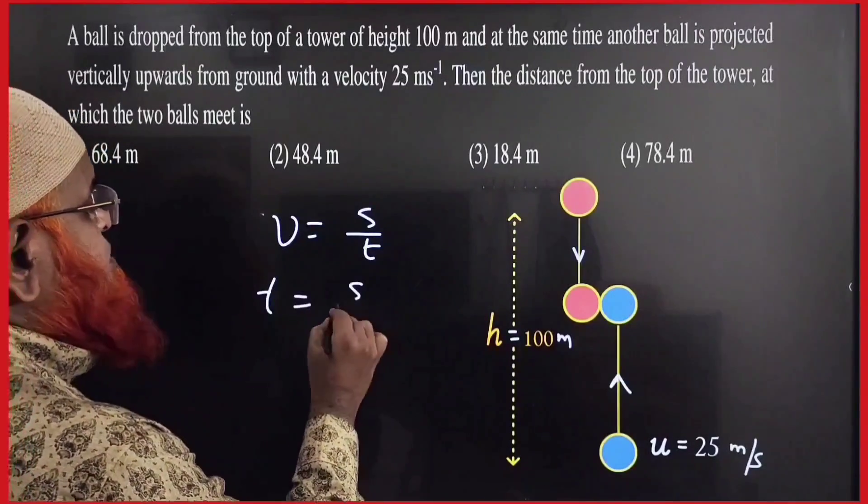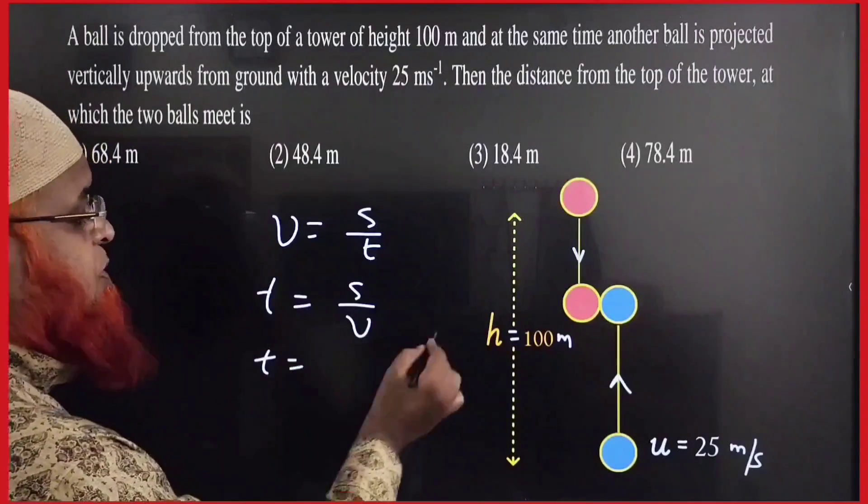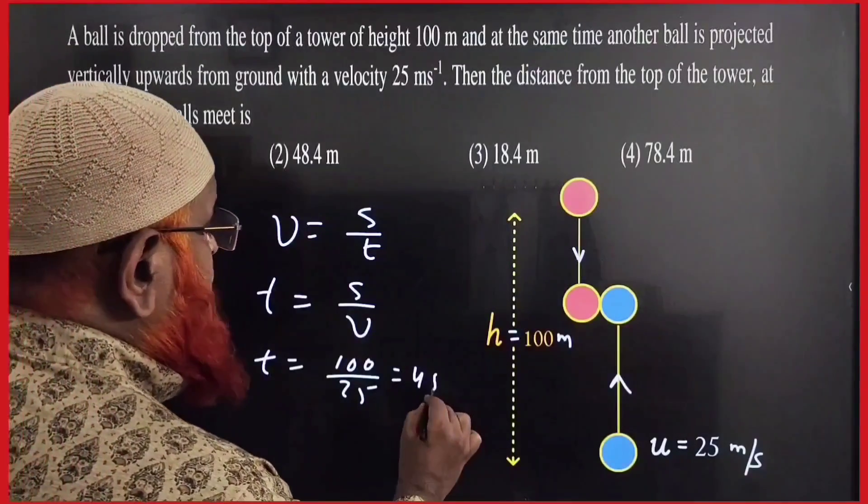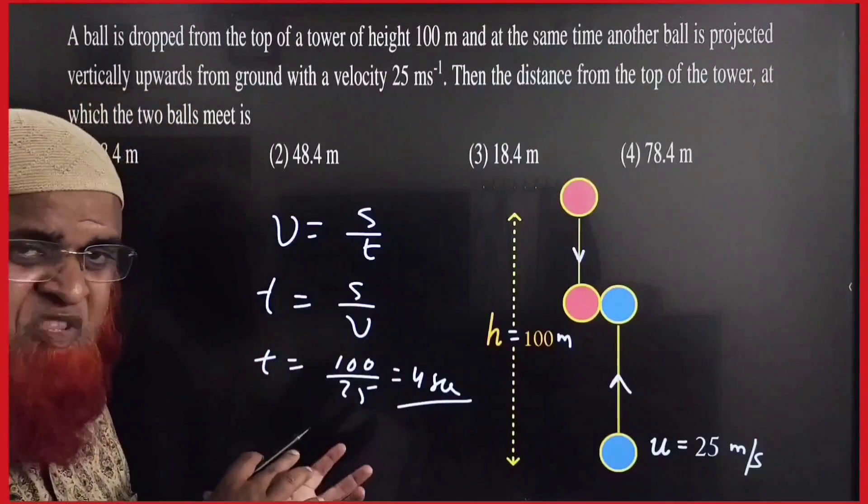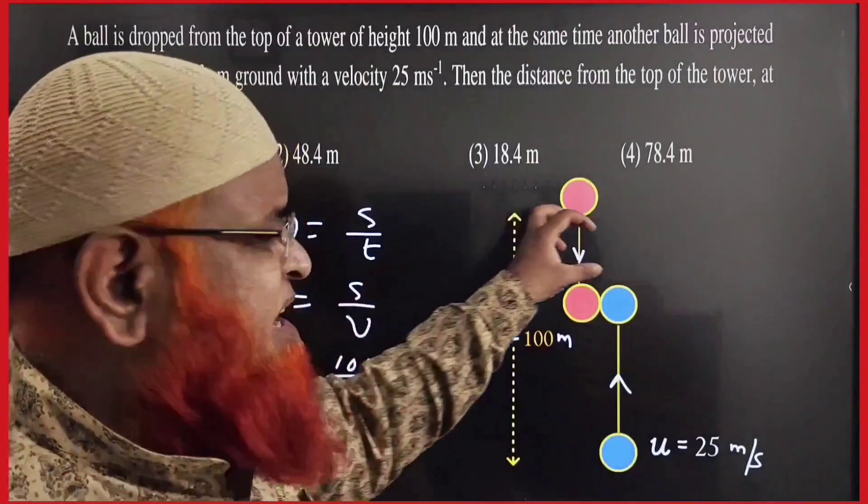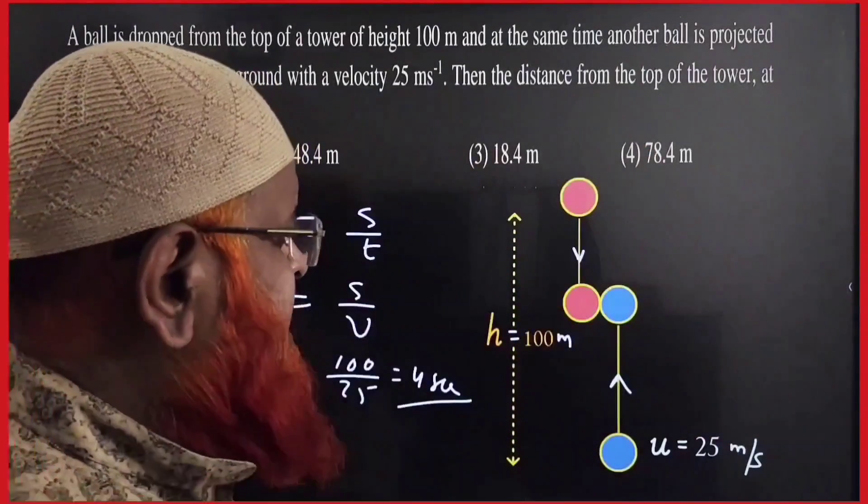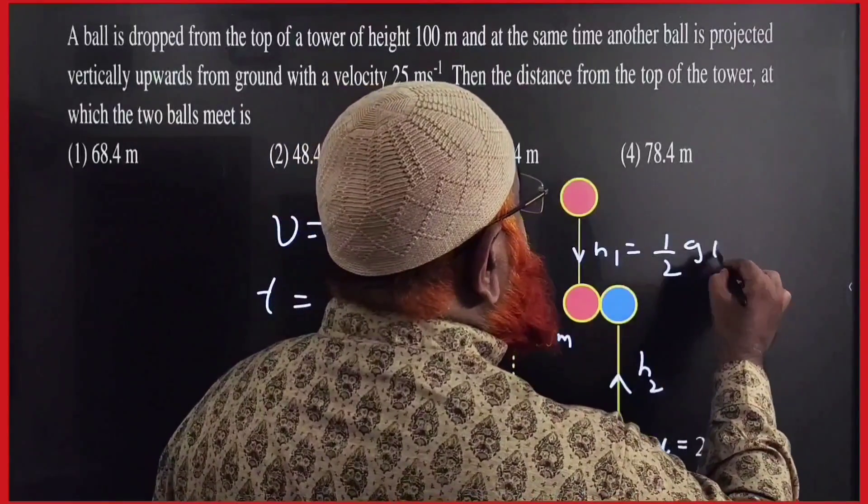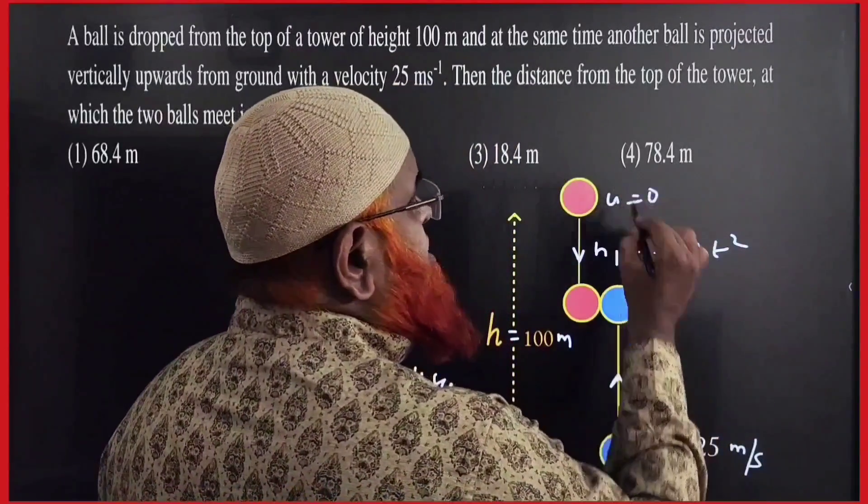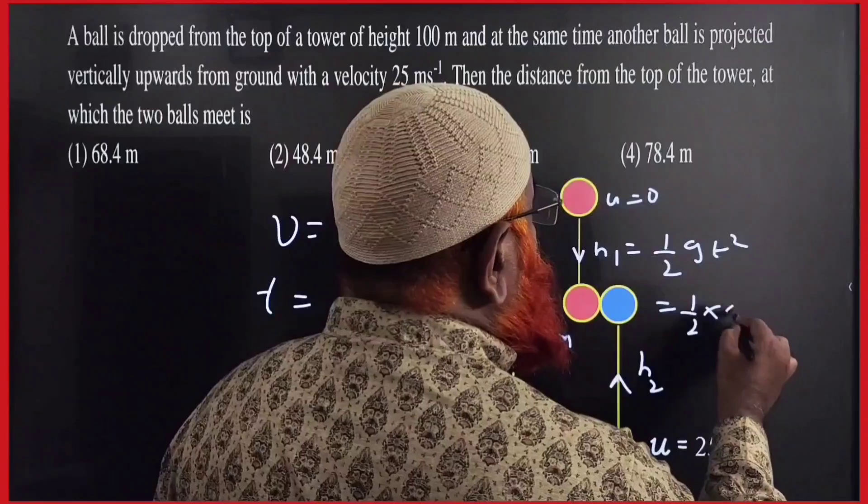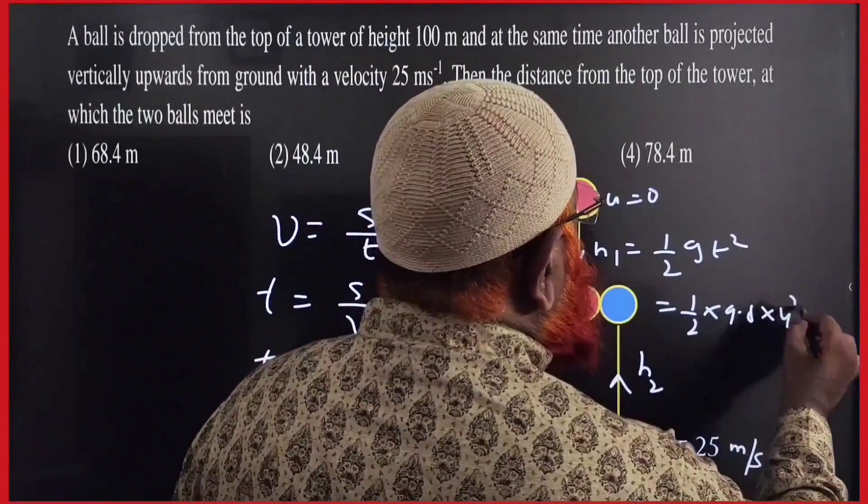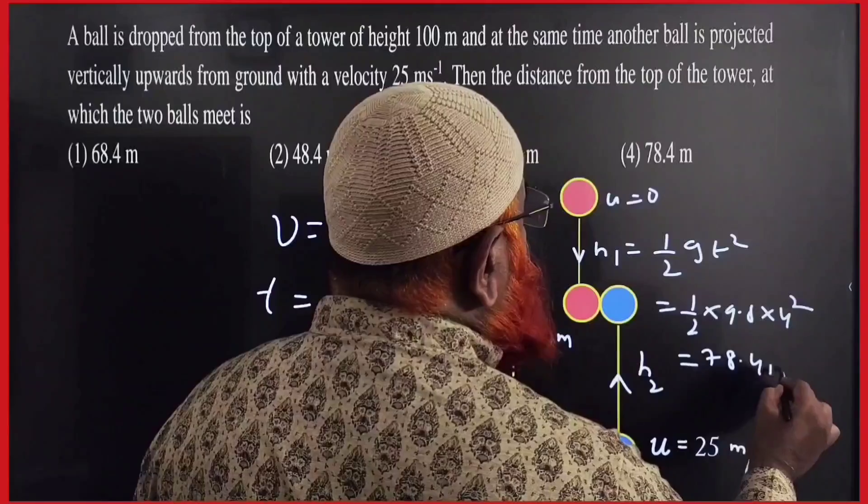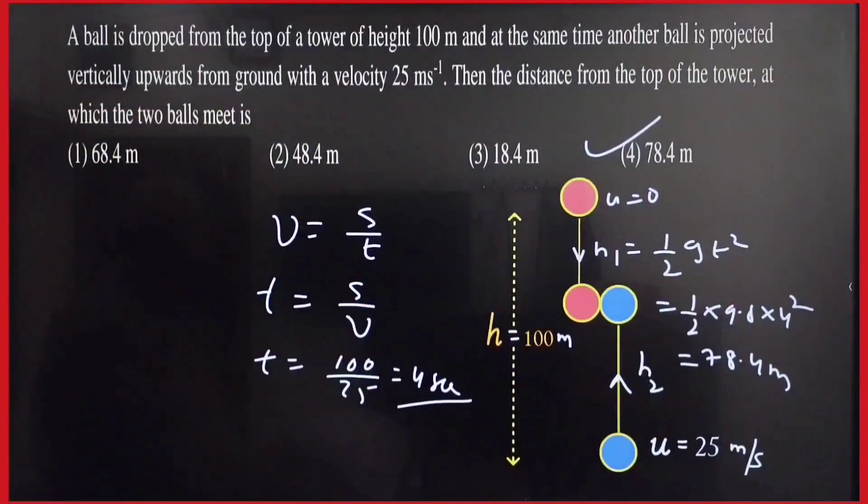Velocity is nothing but displacement by time here. So, time is nothing but displacement by velocity. So, displacement is nothing but 100 by velocity is 25. So, they are going to meet at 4 seconds. This is a shortcut method to solve the problem. So, once they are meeting at 4 seconds, you have to find out the top height. Let us take this is h1 and this is h2. h1 is nothing but half gt square. Therefore, half into 9.8 into 4 square is going to give you approximately 78.4 meters. So, this is going to be your answer.